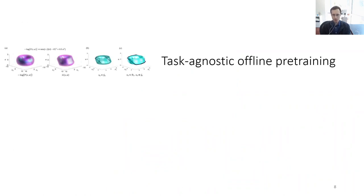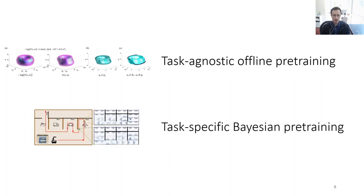I'm going to talk about two methods in this talk. The first, called Lyapunov density models, provides task-agnostic offline pre-training. The second focuses on task-specific Bayesian pre-training. The first will learn a model that provides a constraint for any downstream task, and the second will be task-specific.